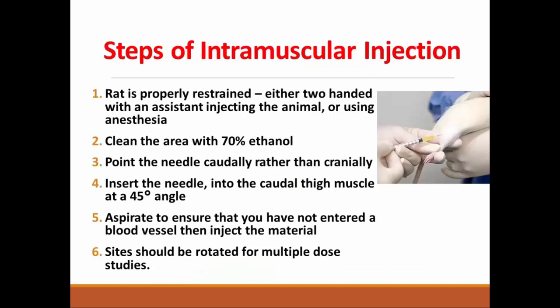Steps of intramuscular injection. First, the rat is properly restrained, either two-handed with an assistant injecting the substance or using anesthesia. Then clean the area with alcohol. Point the needle caudally rather than cranially. Insert the needle into the caudal muscle at a 45-degree angle. Aspirate first to ensure that you have not entered a blood vessel, then inject the substance. Sites should be rotated for multiple injections; you should change the site each time.